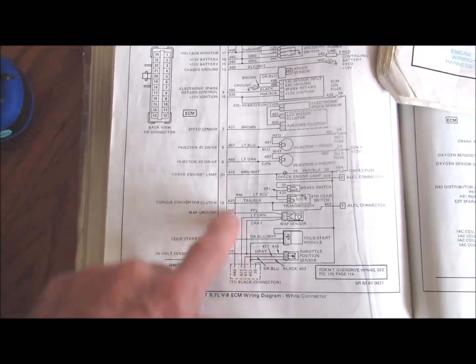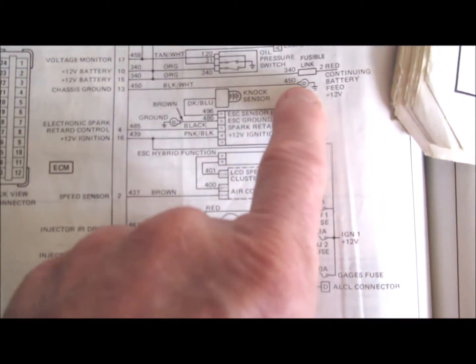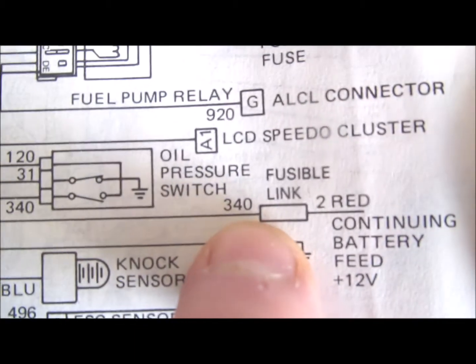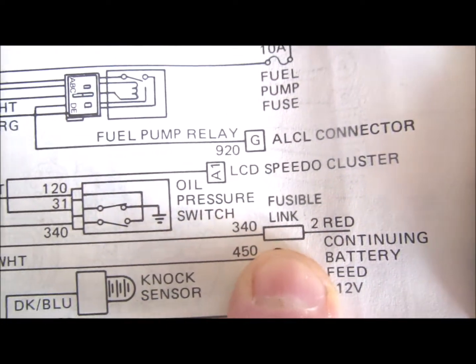Here's the electronic control module wiring. The complete wiring diagram. It shows circuit 340, the fusible link at circuit 340.